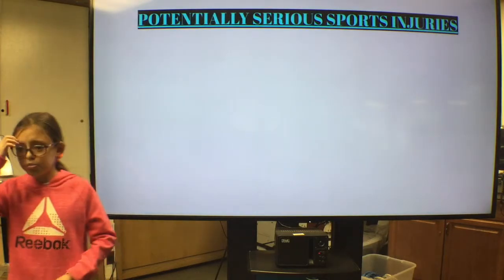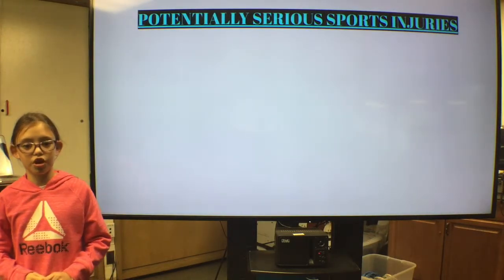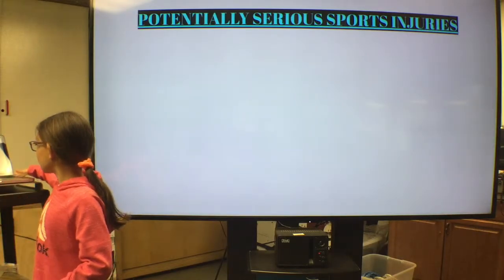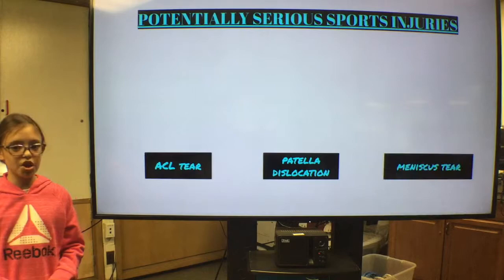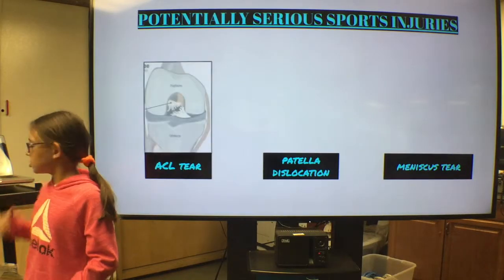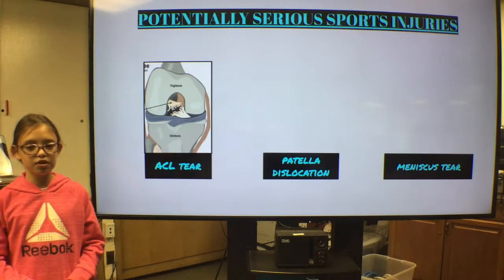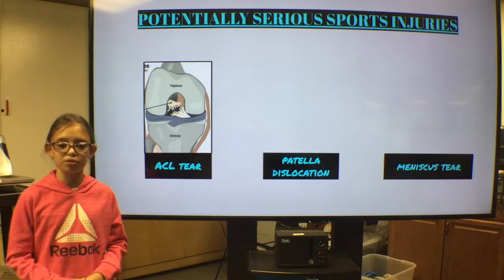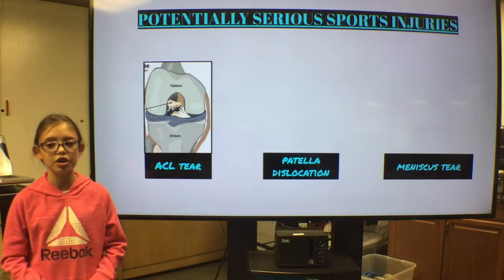There are also some small sport injuries, but those sport injuries can turn into career-ending injuries. Some of these injuries are an ACL tear, a patella dislocation, and a meniscus tear. An ACL tear happens on the knee when there is a sudden stop or change of direction. If it is a 50% or more tear of the ACL, the athlete will need something called an ACL reconstruction, which is a surgery.